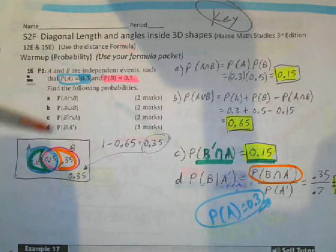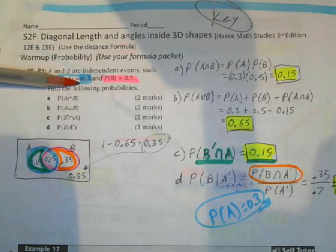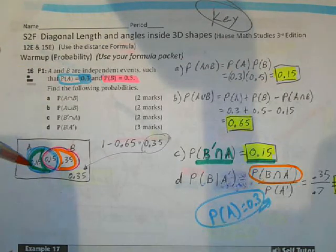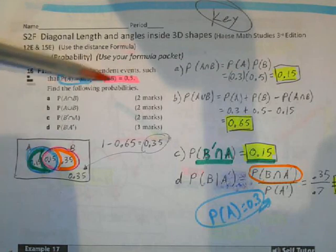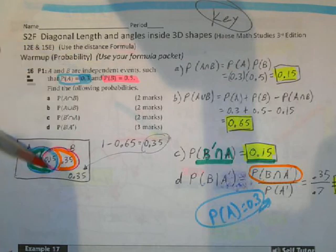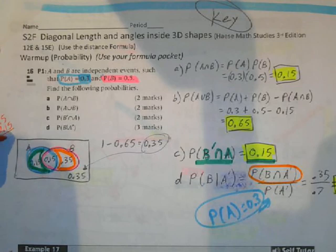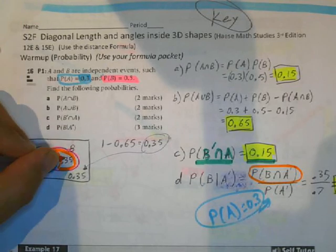Then I said, probability of A is supposed to be 0.3, so this has to be 0.15 in order for these two to add to 0.3. Now I said, notice this is 0.5, so if this is 0.15, I did 0.5 minus 0.15, and I get 0.35, and that's how I got this value here.